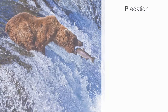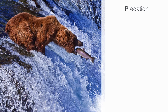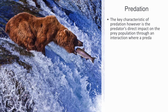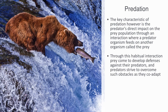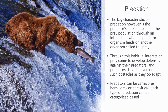Ecological predation is defined as any interaction between two organisms that results in a flow of energy or resources from one to the other. A key characteristic is the predator's direct impact on the prey population. Through this habitual interaction, prey develop defenses and predators strive to overcome them as they co-adapt. This co-adaptation is part of the reason ecosystems exhibit such diversity and complexity. Predators can be carnivores, herbivores, or parasitical. Carnivory is lethal to the prey, while herbivory and parasitism may or may not be lethal.